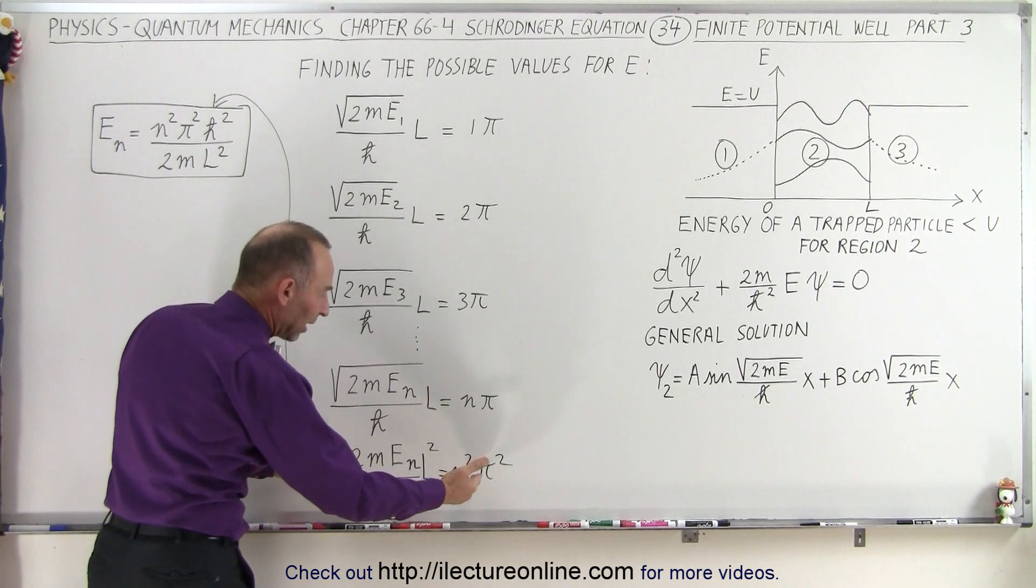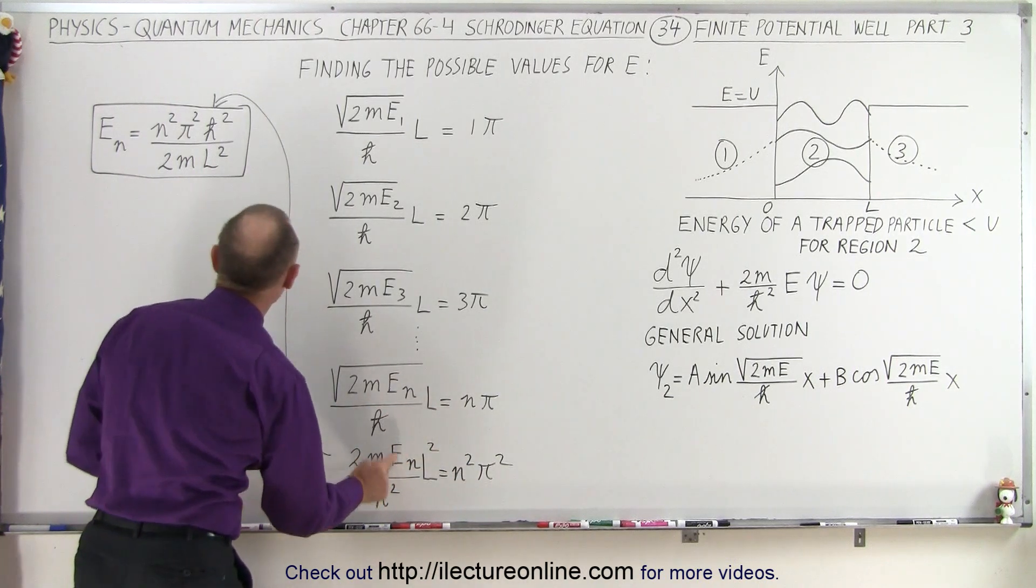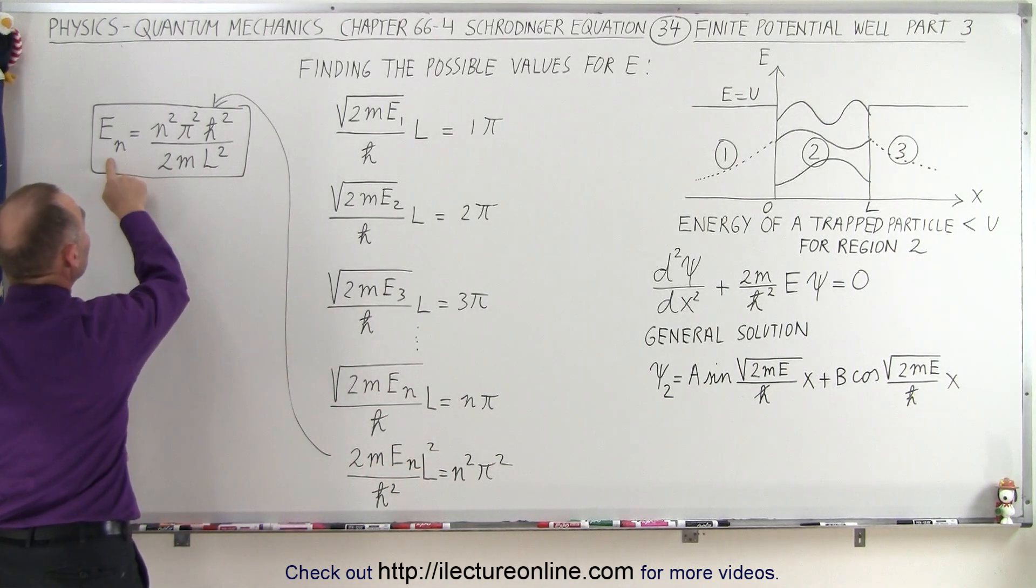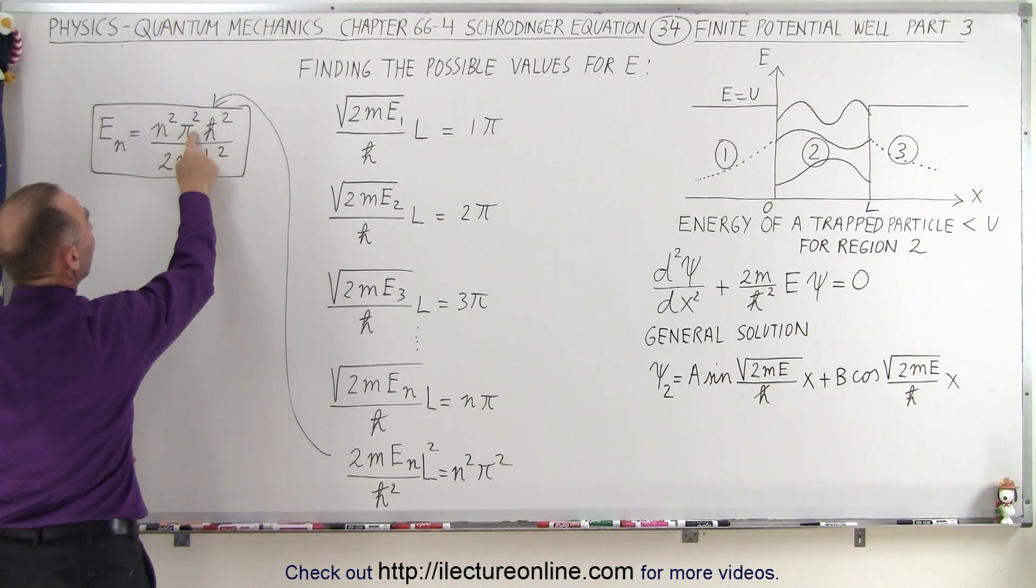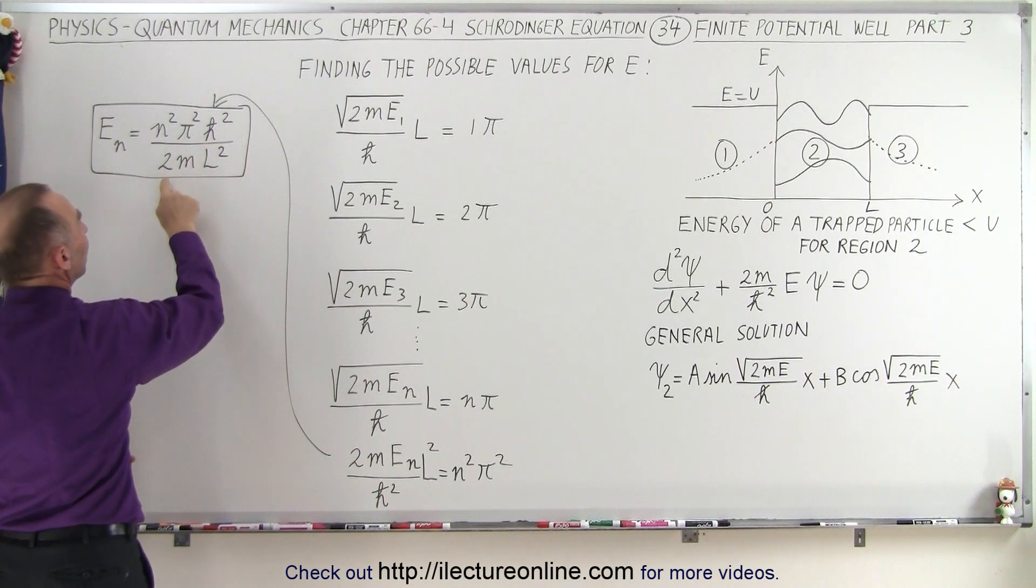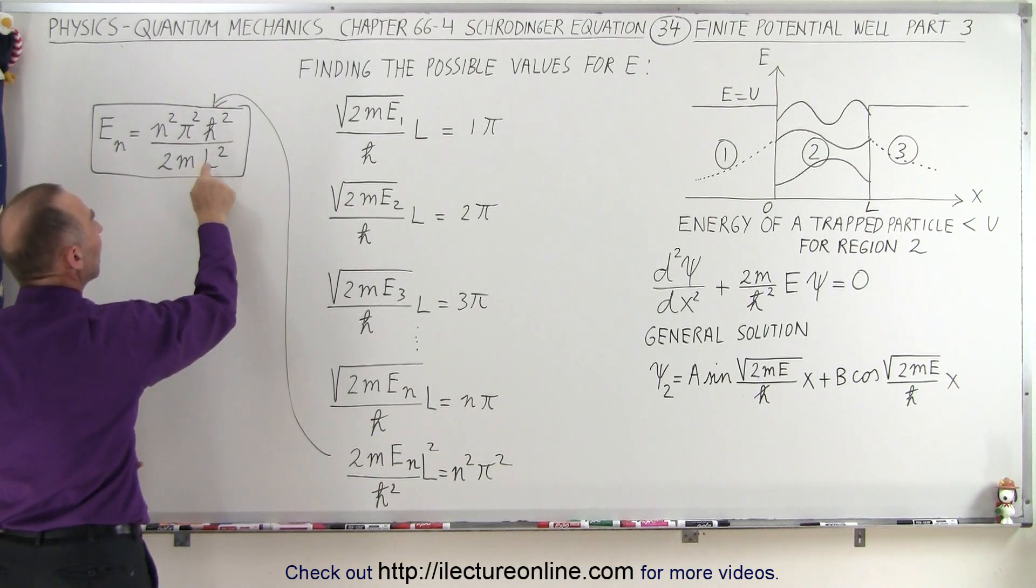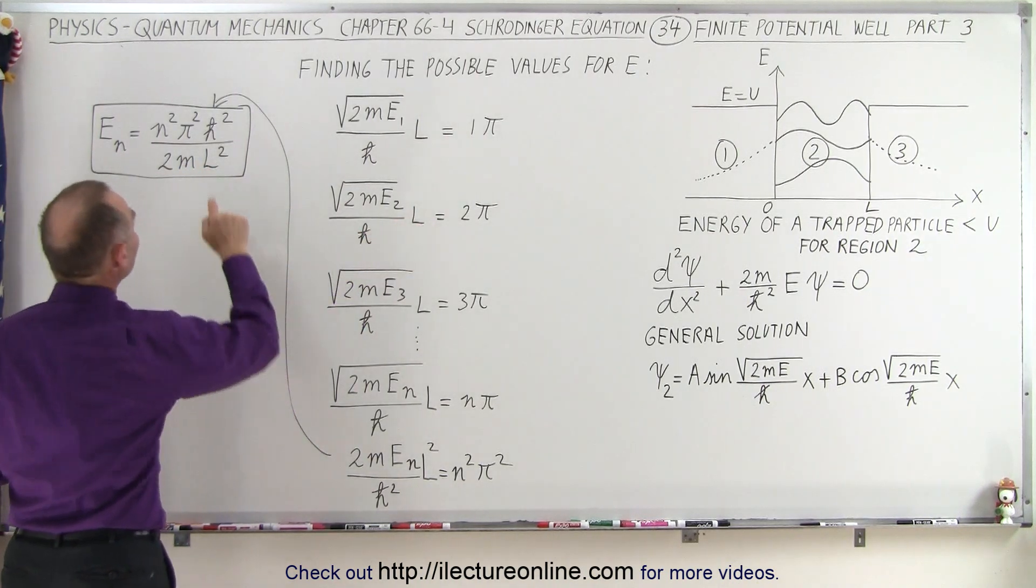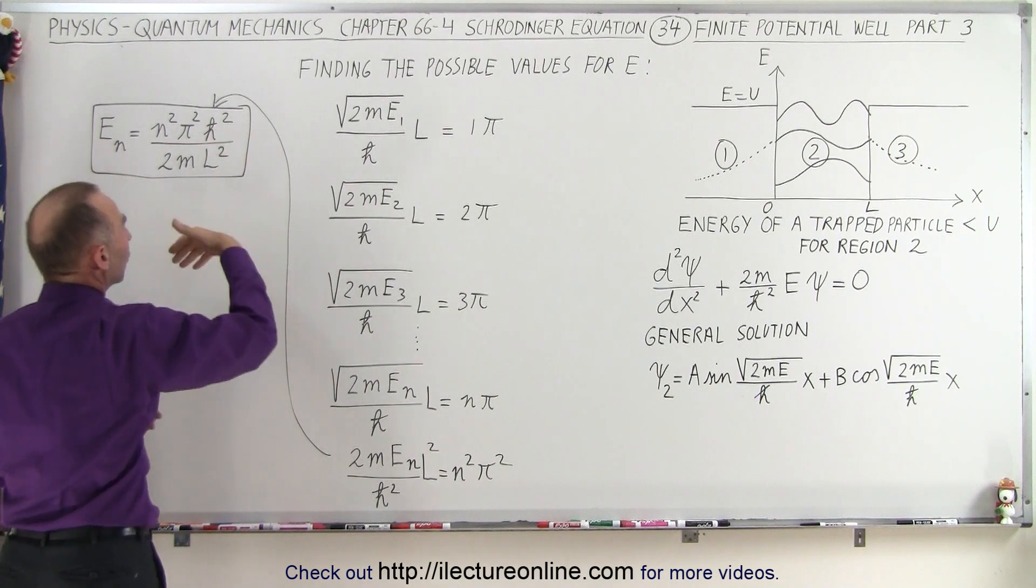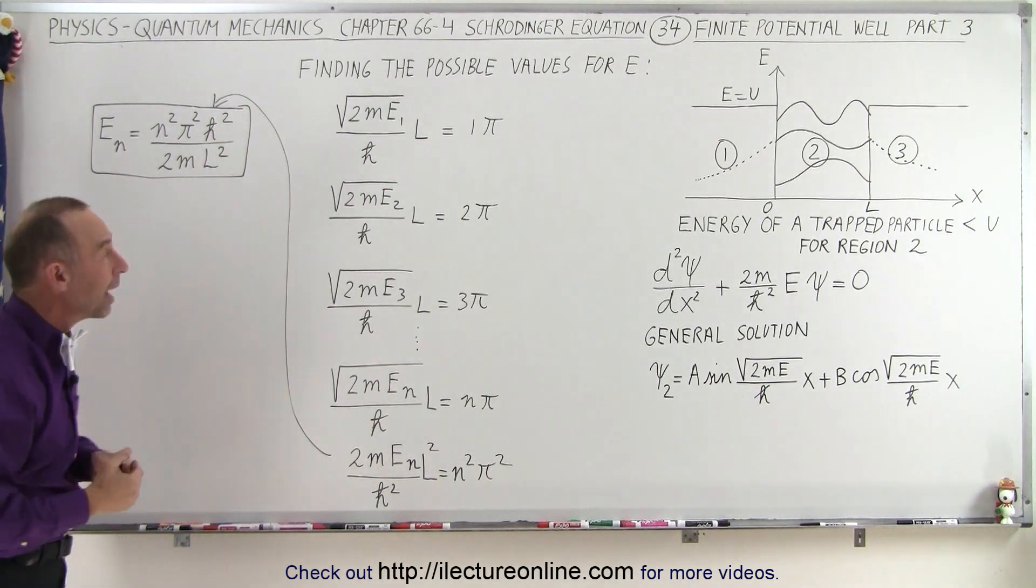When we square both sides and solve for E_n, we get E_n equals n²π²ℏ² divided by 2mL², where m is the mass of the particle, L is the length of the finite well, and ℏ is Planck's constant divided by 2π.